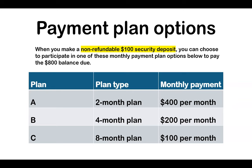Payment plan A is a two-month payment plan in which you will pay $400 per month. Payment plan B is a four-month payment plan in which you will pay $200 per month. Payment plan C is an eight-month payment plan in which you will pay $100 per month.